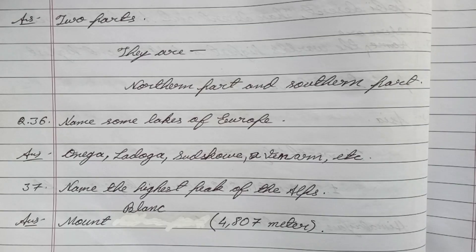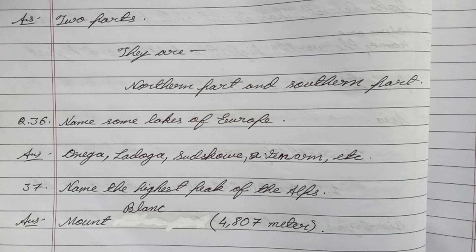Question 36: Name some lakes of Europe. Answer: Onega, Ladoga, Sudskoi, Phenorm, etc. Question 37: Name the highest peak of the Alps. Answer: Mont Blanc.